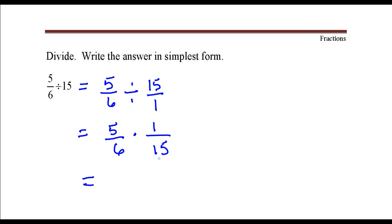To multiply two fractions together, I'm going to multiply numerator times numerator and denominator times denominator. 5 times 1, that's 5.